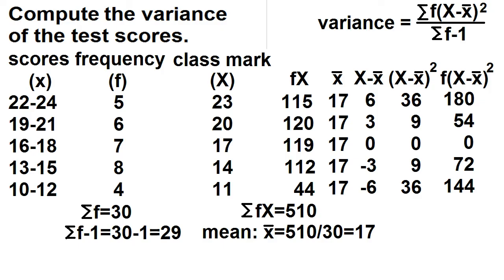Again, find the sum. 180 plus 54 plus 0 plus 72 plus 144 is equal to 450.